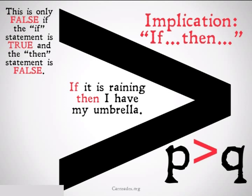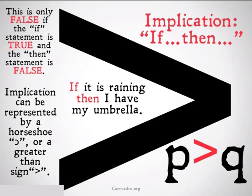We'll take a closer look when we look at the truth tables. Implication can be represented by a horseshoe or by a greater than sign. We're going to use a greater than sign because it's easier to find on a keyboard.